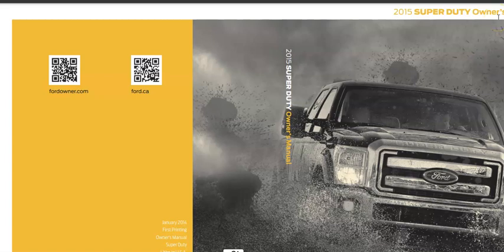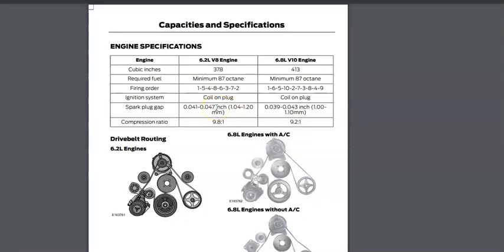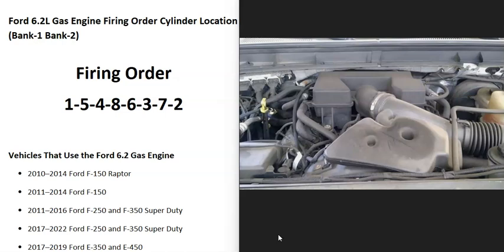I'm going to show you where I'm getting this information, since there is a lot of different information online showing different firing orders. I'll put links down below for everything I'm looking at. For example, here's the owner's manual for a 2015 Super Duty, and if you go down to page 304 inside the manual, the firing order is listed right here.